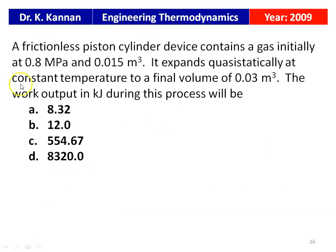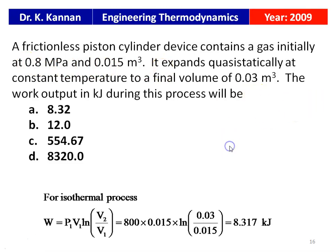From the 2009 question paper: A frictionless piston-cylinder device contains gas initially at 0.8 MPa and 0.015 m³. It expands quasi-statically at constant temperature to a final volume of 0.03 m³. The work output in kJ is asked. For the isothermal process: W = P1V1 × ln(V2/V1) = 800 kPa × 0.015 × ln(0.03/0.015) = 8.317 kJ. The answer is 8.32 kJ.